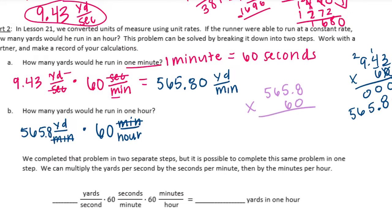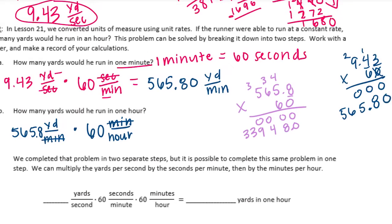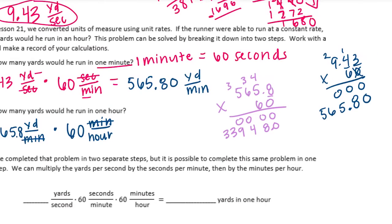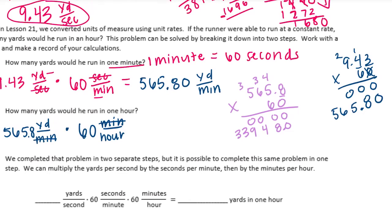Multiplying: 6 times 8 is 48, carry 4; 6 times 5 is 30 plus 4 is 34; 6 times 6 is 36 plus 3 is 39; 6 times 5 is 30 plus 3 is 33. We had one digit behind the decimal point. Since we end up with a zero behind the decimal, we can drop it, giving us 33,948 yards per hour.